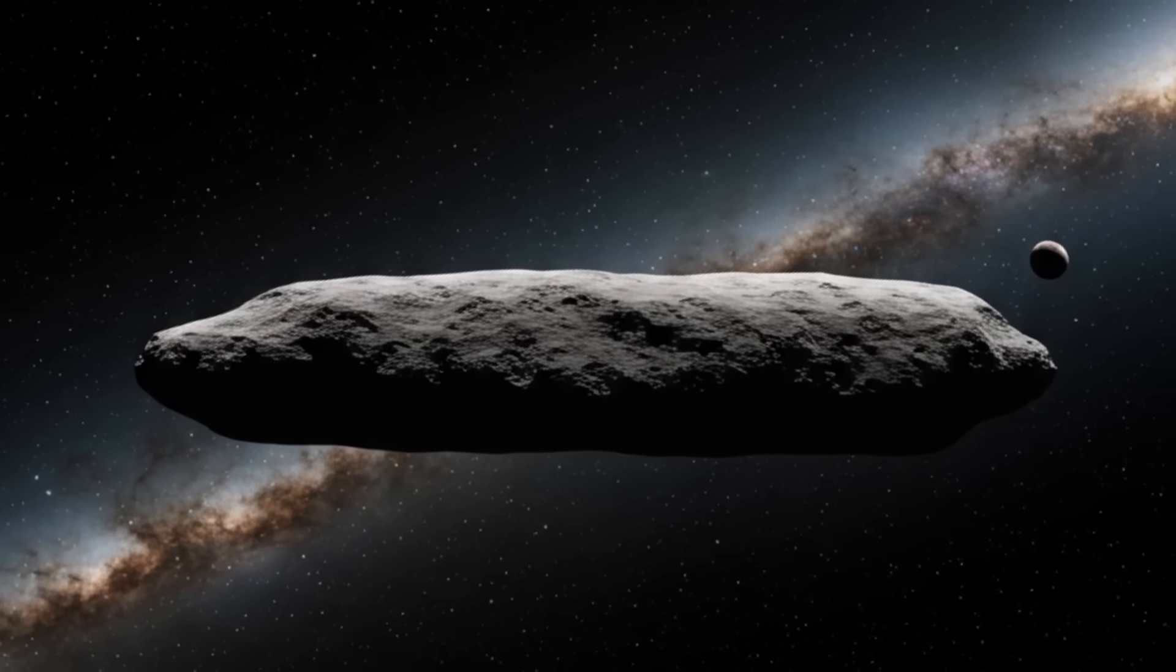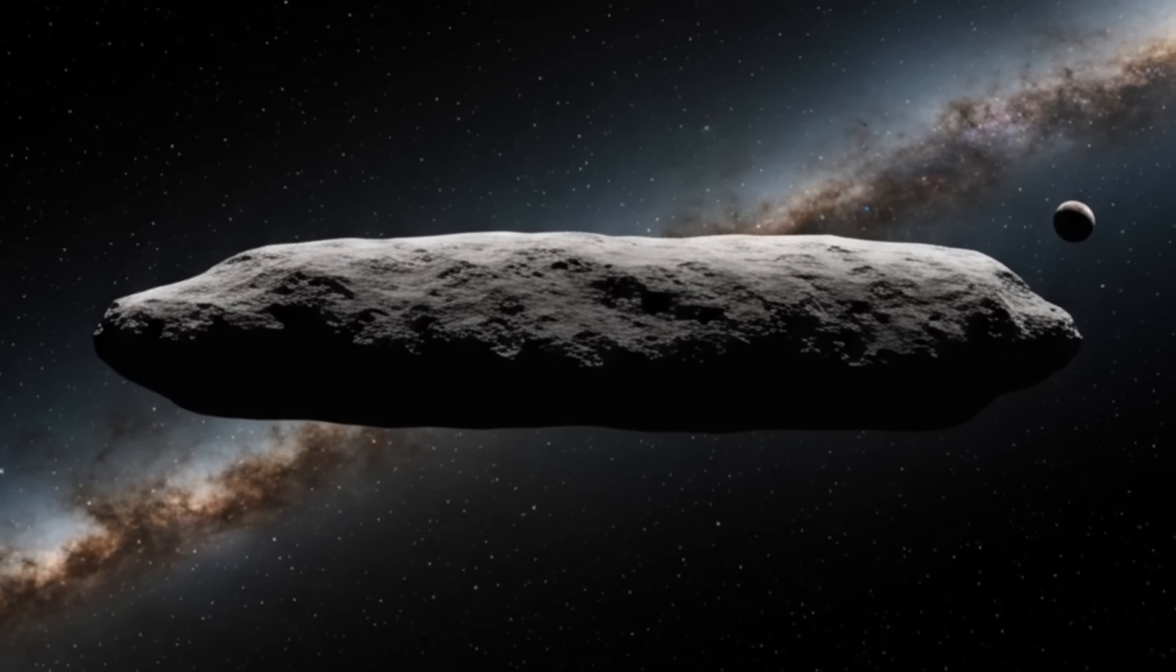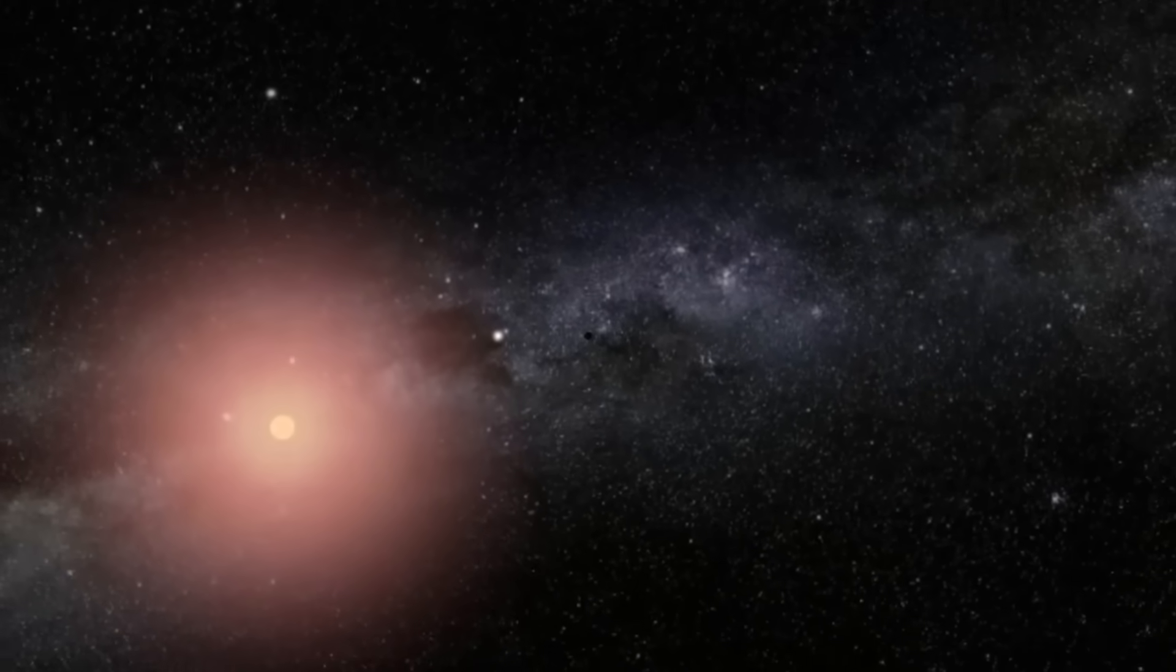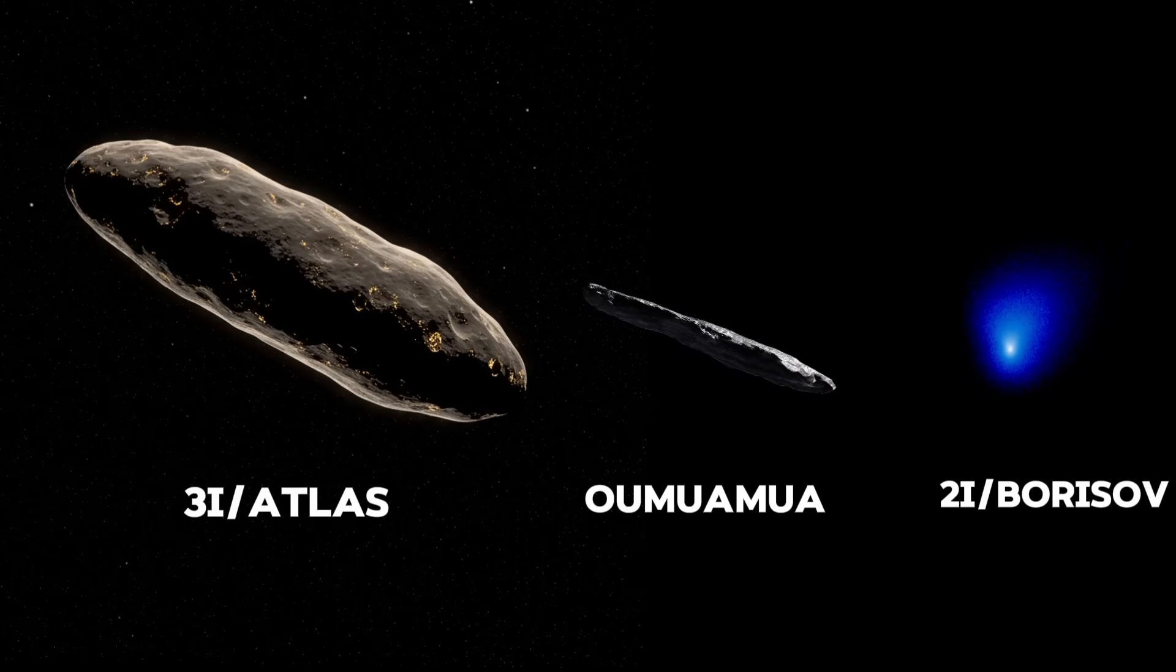If the surface were dark like that of a rocky asteroid, it would have to be huge, around 12 miles or 20 kilometers wide to reflect this much light. If true, that would make it much larger than both Oumuamua and Borisov.